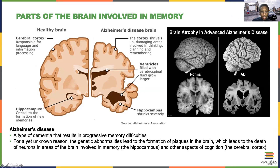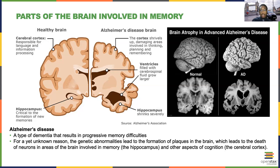In a healthy brain, you'll see that the cortex has many folds — the gyri and sulci are pretty close together. Whereas in Alzheimer's disease, the gyri and sulci are spread much further apart. You'll also see that the ventricles — the fluid-filled areas within the brain — become much enlarged in someone who has Alzheimer's disease. And then there's also the hippocampus, which shrinks in someone who has Alzheimer's disease — which makes sense given that the hippocampus is the structure involved in transferring memories from short-term memory into long-term memory.